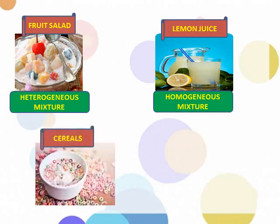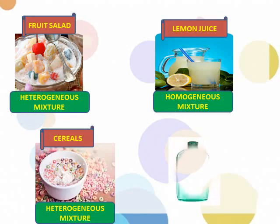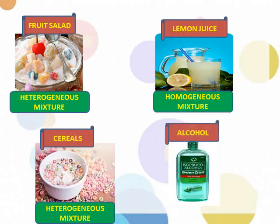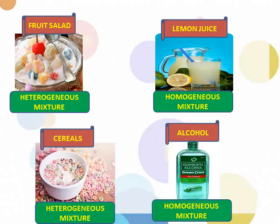Next one is cereals. Cereals is also a heterogeneous mixture — as you can see, the ingredients are very visible and it is non-uniform. The last one is alcohol. Alcohol is a homogeneous mixture — you cannot see the presence of ingredients in alcohol and it is uniform.